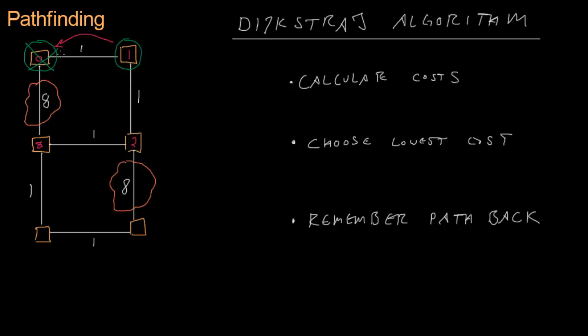Now we choose the lowest cost node from all nodes we've assigned costs to. Remember, we're not just looking at direct neighbors — we're comparing all unvisited nodes. So 8 compared to 2: obviously 2 is lower, so we make that the current node, remove the previous one from consideration, and remember the path backward.